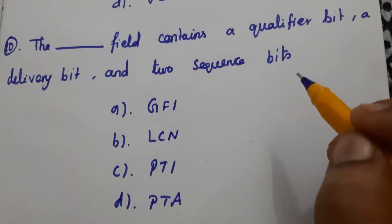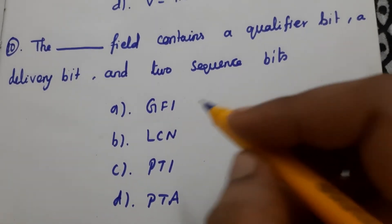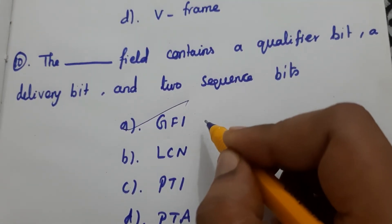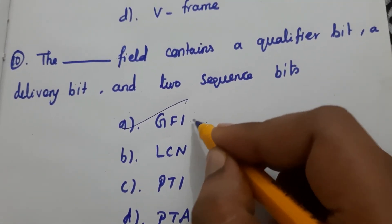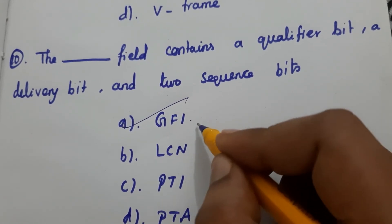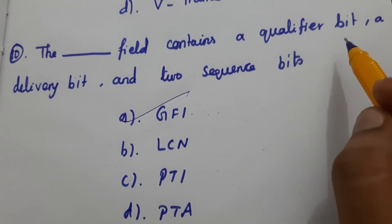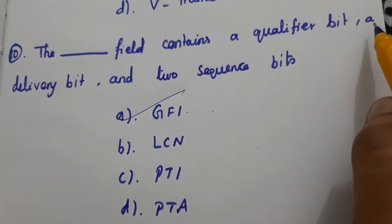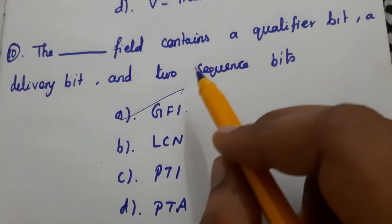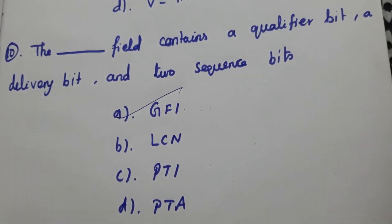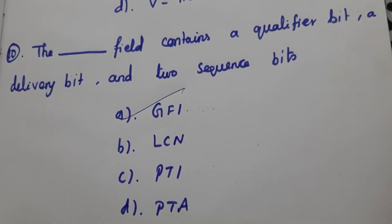Next question: The General Format Identifier (GFI) field contains a qualifier bit, a delivery bit, and two sequence bits. So the answer here is A.